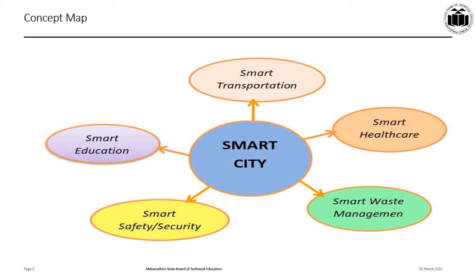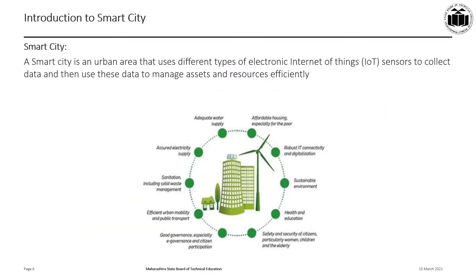To understand the Smart City concept, we need to understand the concepts of Smart Transportation, Smart Health Care, Smart Waste Management System, Smart Physical Safety or Security, and Smart Education. A Smart City is an urban area that uses different types of electronic IoT sensors to collect data and then uses this data to manage assets and resources efficiently. This includes monitoring and managing traffic and transportation systems, power plants, water supply systems, waste management systems, crime detection, information systems, schools, libraries, hospitals, and other community services of the city with the help of IoT.